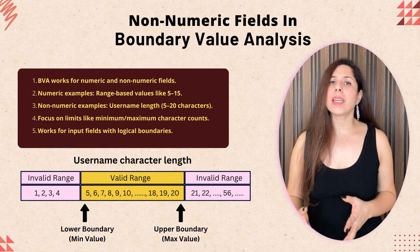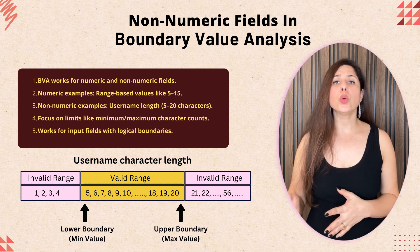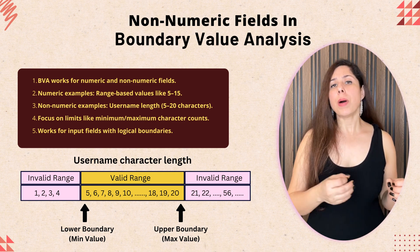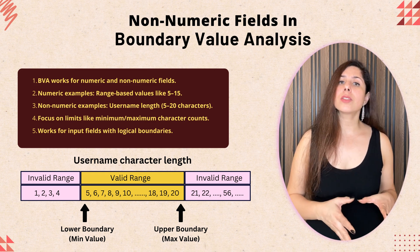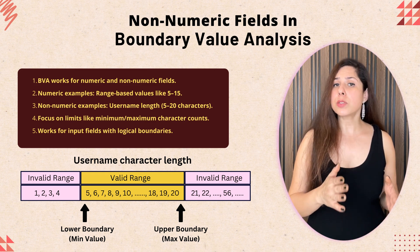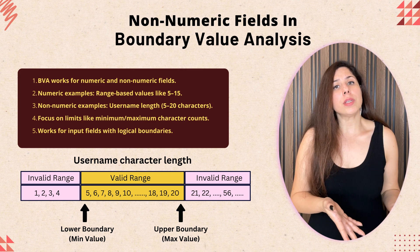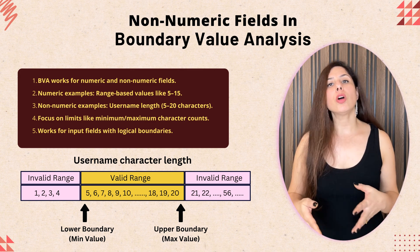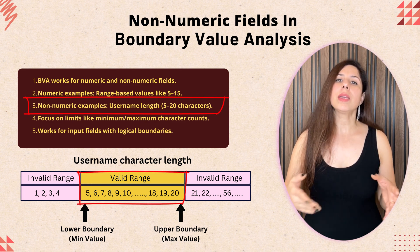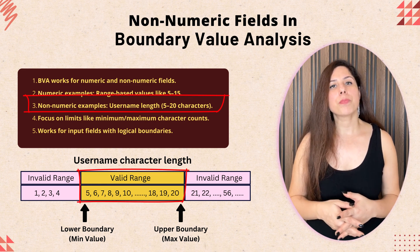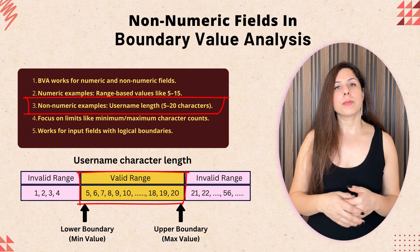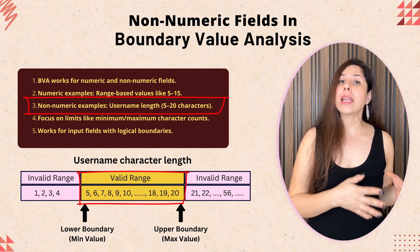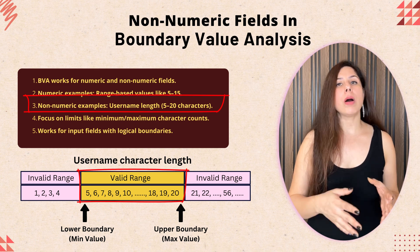Another commonly asked question is: can boundary value analysis be used with non-numeric fields? In most cases, BVA applies to numeric fields, but it's possible to have non-numeric fields with range limits. For example, the number of characters in a username can be within a range like 5 to 20. A username should be in this range only, and it fits perfectly for boundary value analysis.